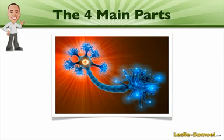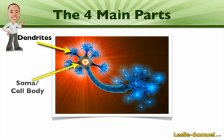Let's talk about the four main parts of a neuron. First we have the dendrites, and these are points where the cell receives inputs from other cells. Then we have the soma, or the cell body, and this is the part of the neuron that is most like any other cell. It is also a place where the neuron receives input, and it's a place where there's a lot of processing happening.